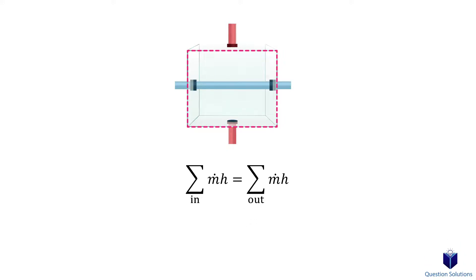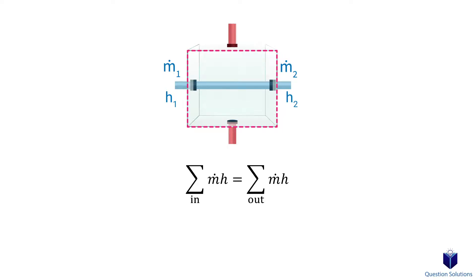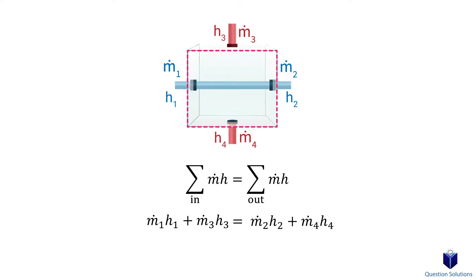Looking at our heat exchanger, we have two separate inputs and two separate exits. The blue pipe has one input and one output — the inlet has its own mass flow and enthalpy value, and the same goes for the outlet. The red pipe also has one inlet and one outlet with its own mass flow and enthalpy. So for our energy balance equation, the inputs are m-dot-1 with h1 and m-dot-3 with h3, and the outputs are m-dot-2 with h2 and m-dot-4 with h4.